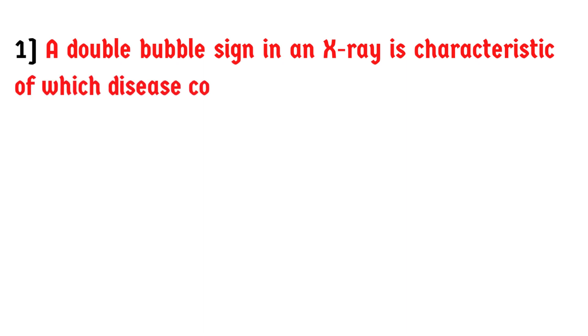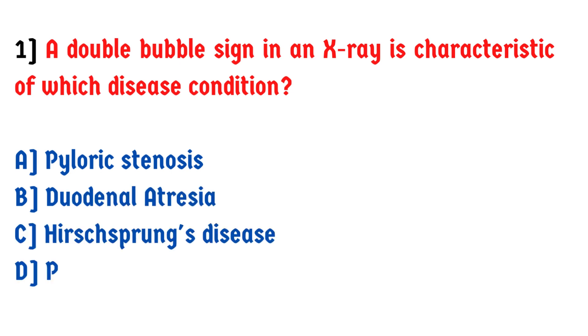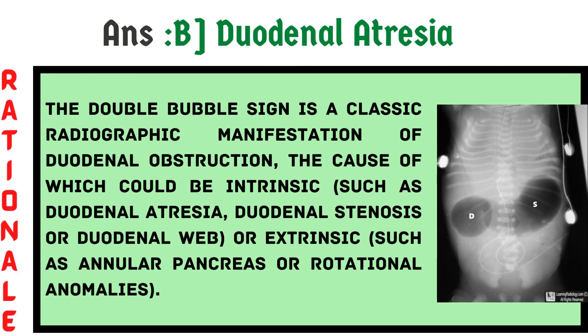A double bubble sign in an x-ray is characteristic of which disease condition? A) Pyloric stenosis, B) Duodenal atresia, C) Sponge disease, D) Peptic ulcer. The answer is B, duodenal atresia. A double bubble sign on radiological examination — x-ray and sometimes USG — shows dilatation of the duodenum and the stomach on either side of the vertebral column. This is a classic radiographic manifestation of duodenal obstruction, caused by intrinsic factors such as duodenal atresia, stenosis, or duodenal web, or extrinsic causes such as annular pancreas or rotational anomalies.